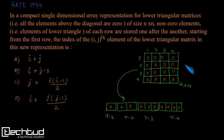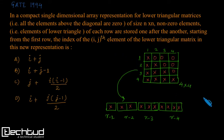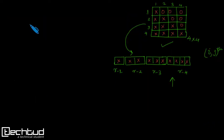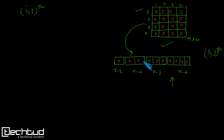The question asks: if we represent this 4 by 4 two-dimensional matrix as a one-dimensional array with each row stored one after the other, what will be the index for accessing the i,j-th element of the original matrix in this new single-dimensional representation?